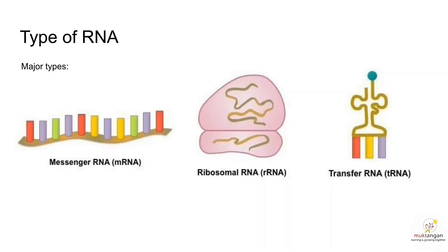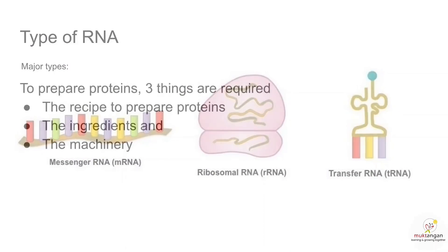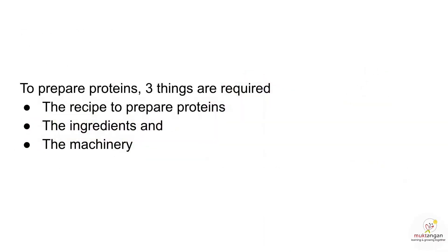I'll explain how the types of RNA help in protein synthesis with an analogy. We all know that the ribosome is the protein-producing factory of a cell. To prepare proteins, three things are required: the recipe to prepare proteins, the ingredients, and the machinery.